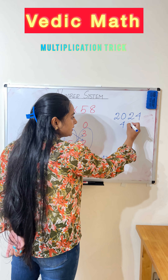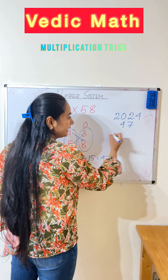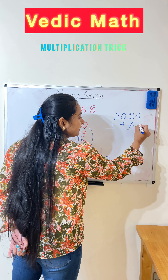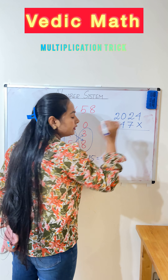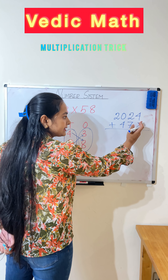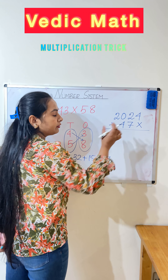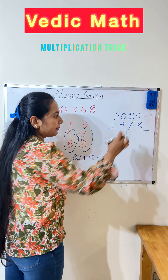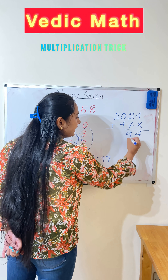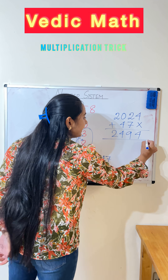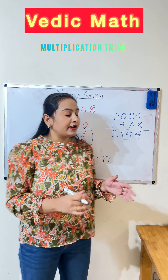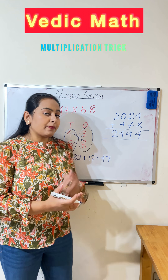We need to add 47 to it, but we can't place this at the units place — we have to place that number before the units place. Then we get 4942. Within 30 seconds, we can find out this type of question.